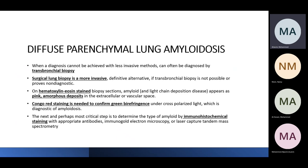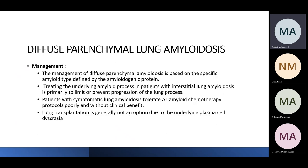After obtaining biopsy, hematoxylin and eosin staining shows amorphous amyloid deposits, Congo red staining confirms the diagnosis, and immunohistochemical staining differentiates the cause — Kappa or Lambda light chains. Management depends on the primary cause. If secondary to AL immunoglobulin light chain disease, chemotherapy is part of management. Lung transplant is generally not an option due to underlying plasma cell abnormalities.